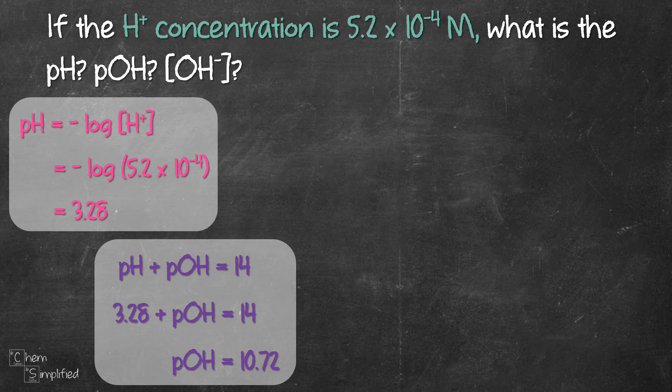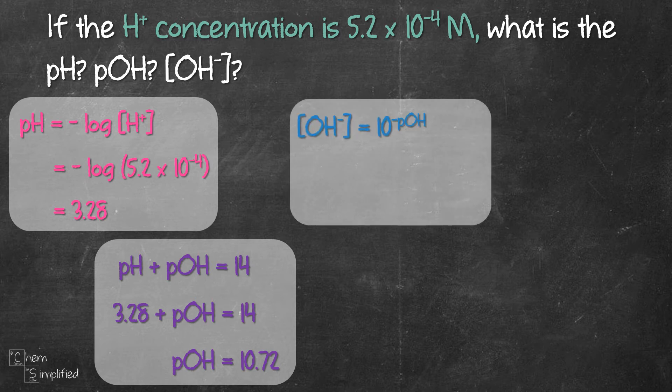Now that we found the value for pOH, we can use that and we can find the concentration of OH-. So we find the antilog of negative 10.72 and we get 1.9 times 10 to the negative 11 molar. It's important not to forget the unit for concentration, that's capital M.